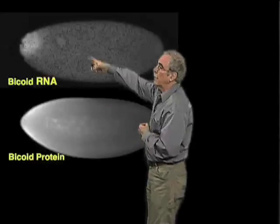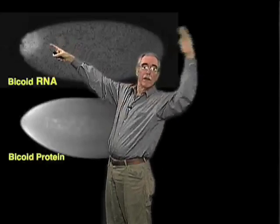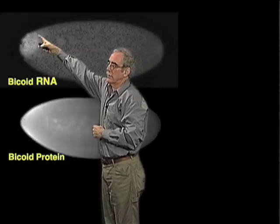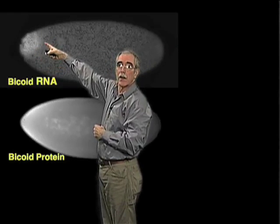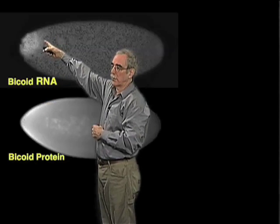but instead, when she's making the egg back in the ovary, long before fertilization, she deposits the RNA that encodes this protein and anchors it to the anterior end of the egg.